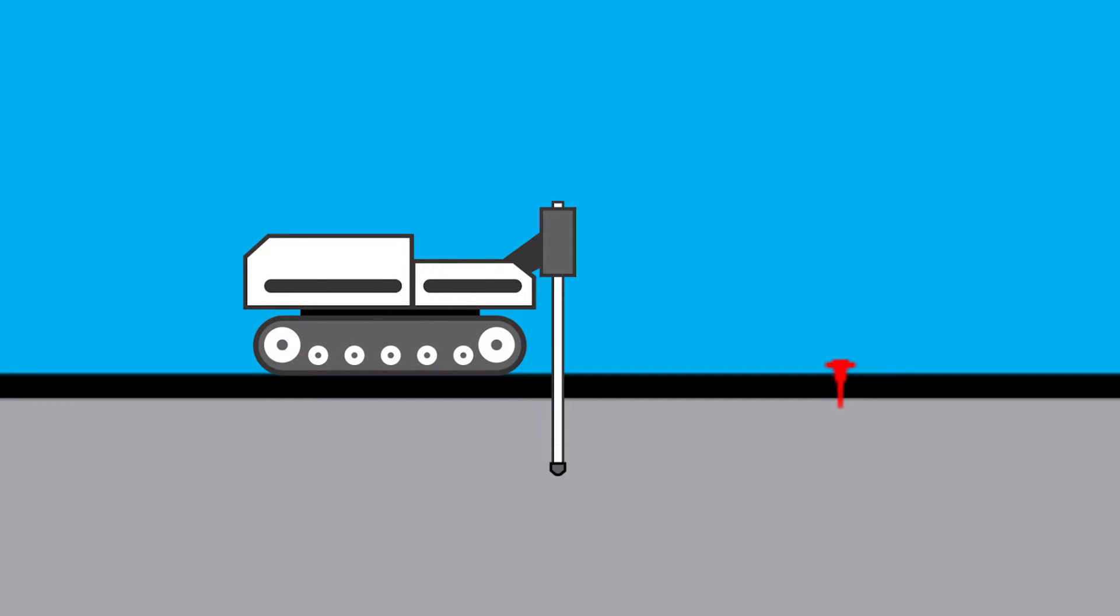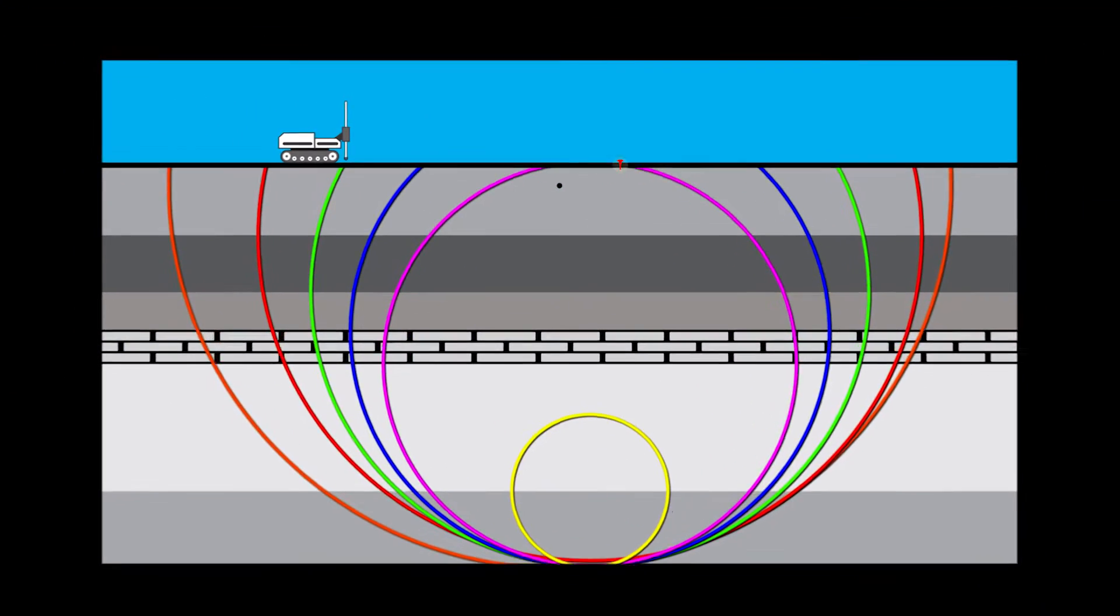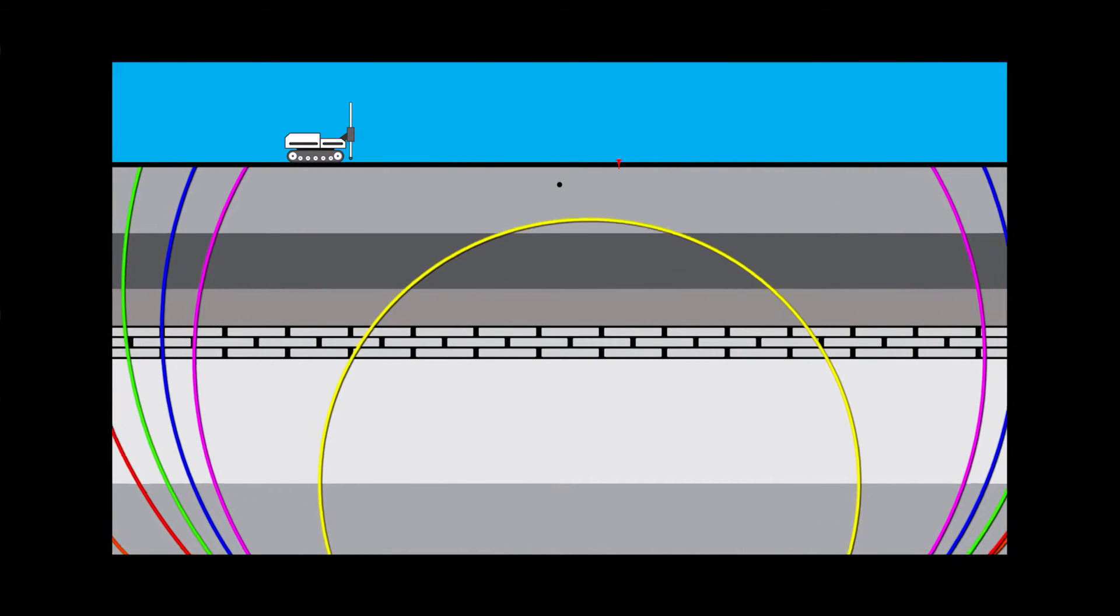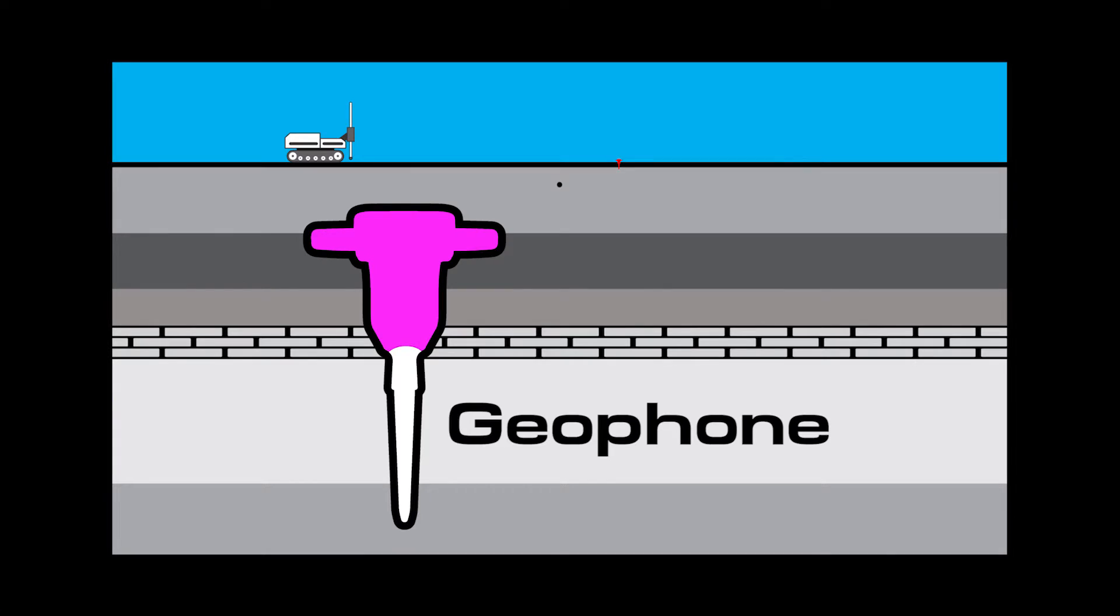Anyway, we set off the source and the spreading waves go down. At each geological contact, some of the wave is reflected and some of the wave is transmitted. The direct wave and the reflections are picked up at our ear on the ground or geophone.